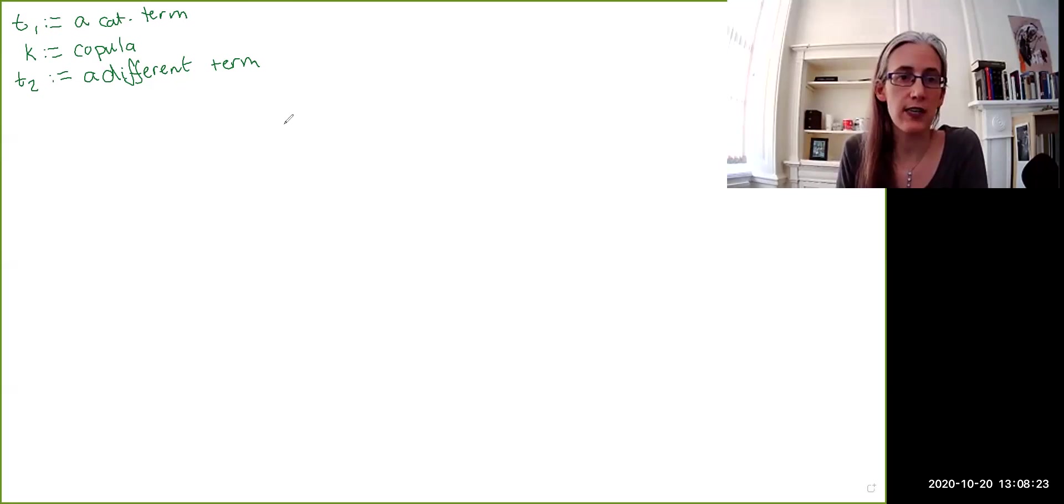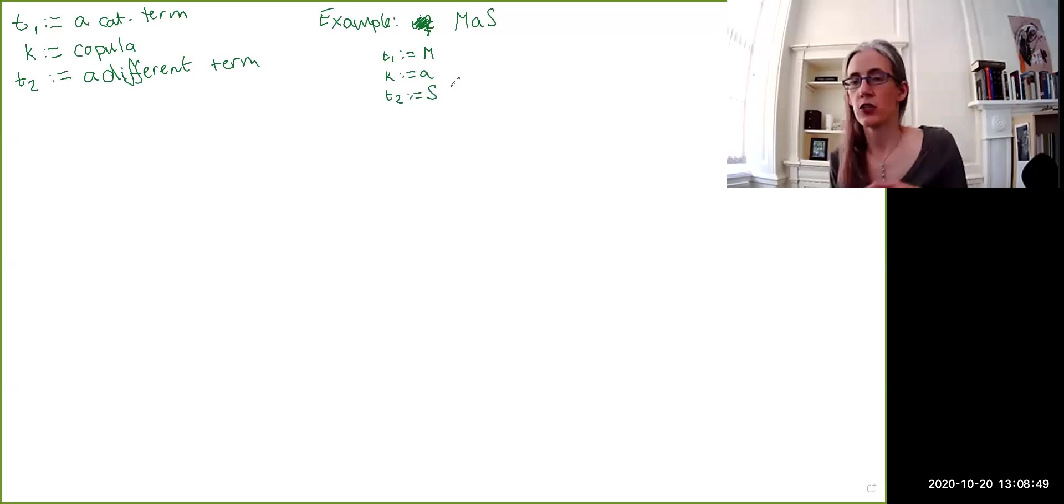So just as another example, so that we've got it up here while we go on to define the rules. If we have, say, MAS, MAS would have T1 is M, the copula is A, and T2 is S. So you've got that off to the side so that you can refer back to it anytime that you need to.